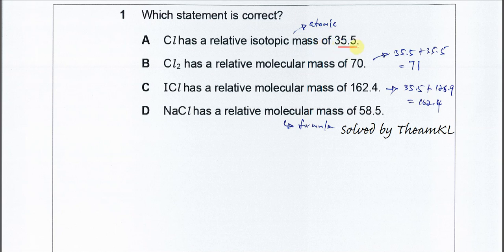35.5 is the average mass, so it's supposed to be relative atomic mass. So this one is wrong.